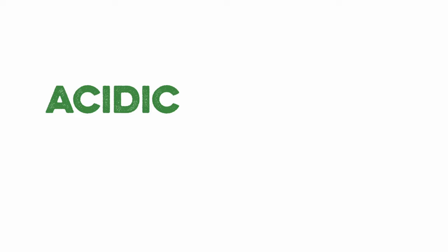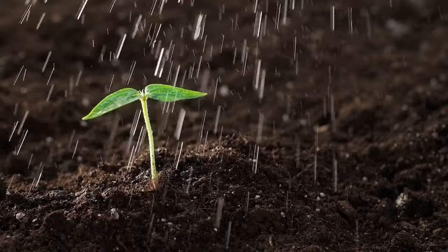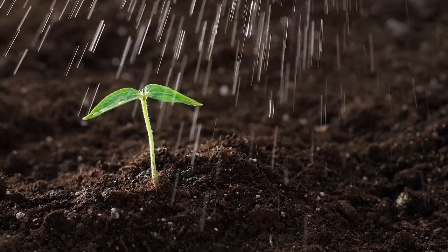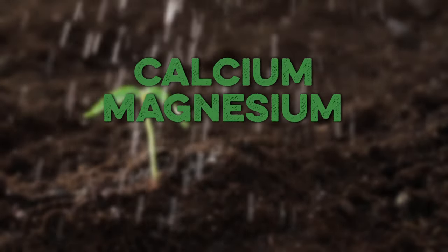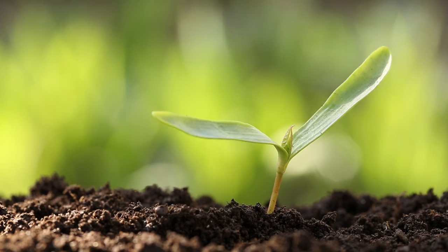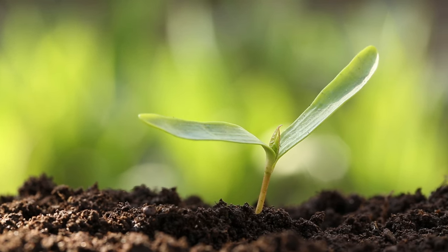These positively charged cations can be divided into two categories: acidic, or acid-forming cations, and basic, or alkaline-forming cations. The cations we are mainly concerned with in soil are calcium, magnesium, potassium, and sodium. They are all alkaline, or basic cations, and are used by plants as nutrients.